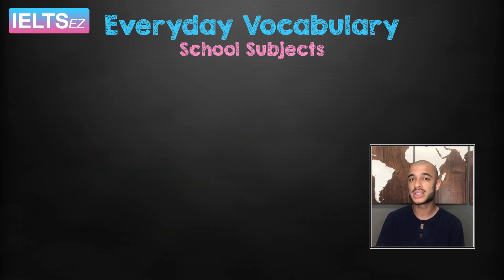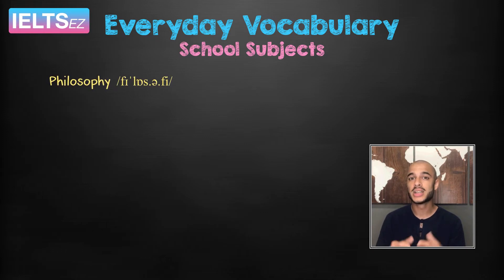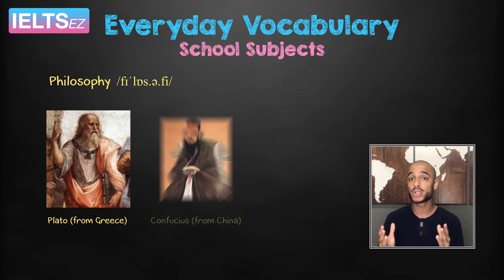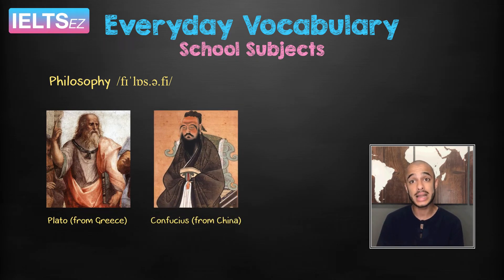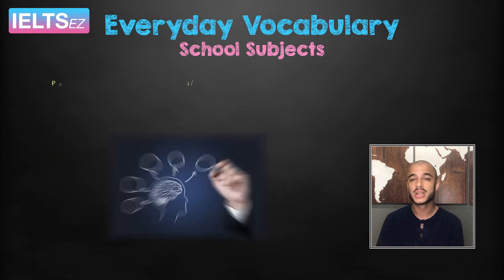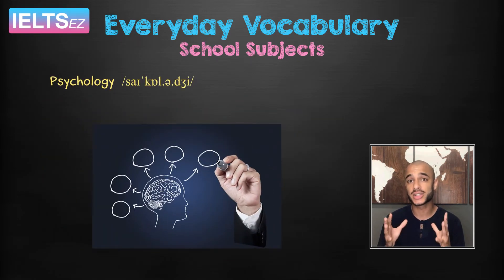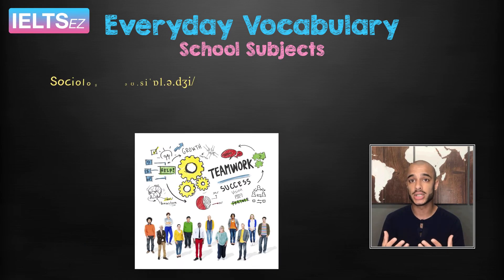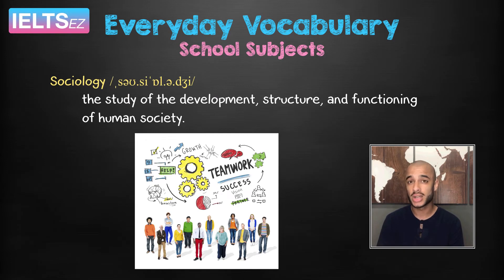Let's go through what some of these subjects are. Philosophy — defining philosophy is difficult. Perhaps you know of some famous philosophers instead, such as Plato from Greece, Confucius from China, and Karl Marx from Germany. Psychology is the study of one's mind and behaviour, while sociology is the study of the development, structure and functioning of human society.